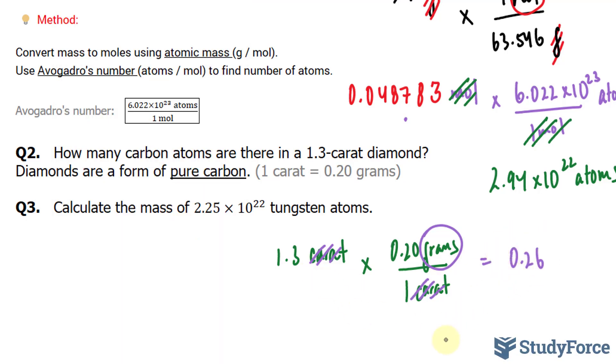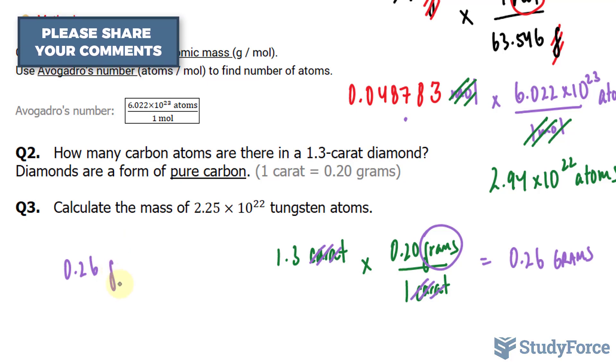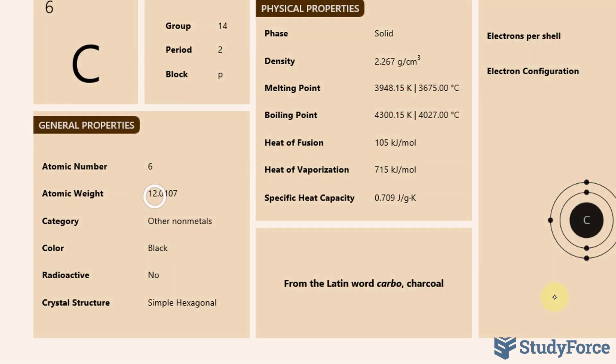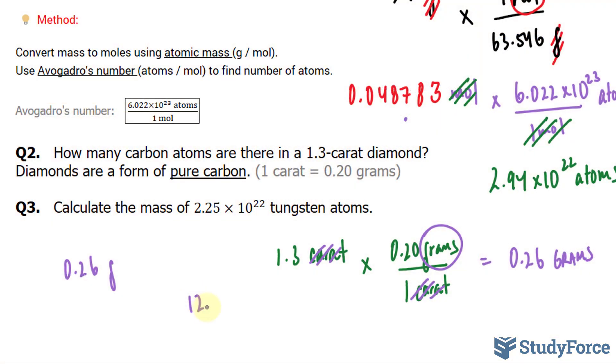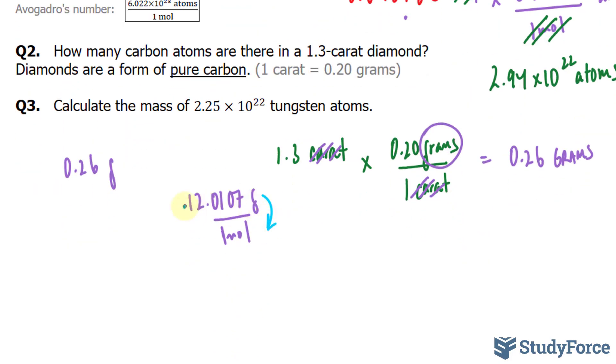We end up with two significant figures and that's what we started with, so that's good. So I'll take 0.26 grams and multiply it by the atomic weight. Let's find out the atomic weight of carbon. The atomic weight of carbon is 12.0107. Now if you think about this, we have to flip this atomic weight.